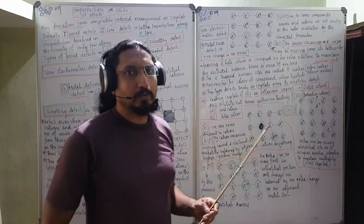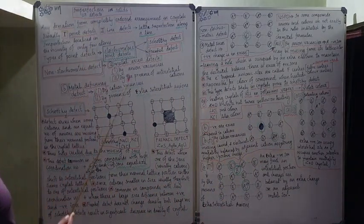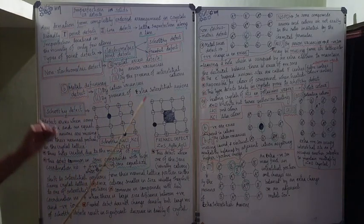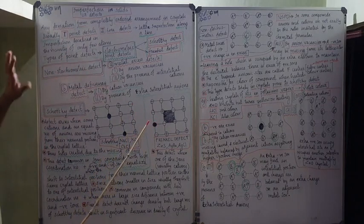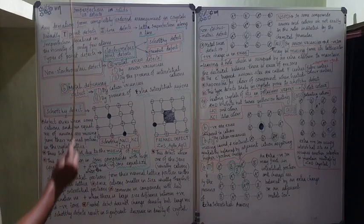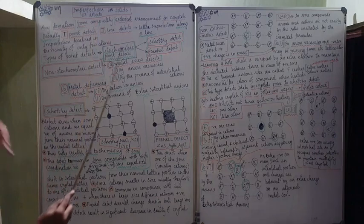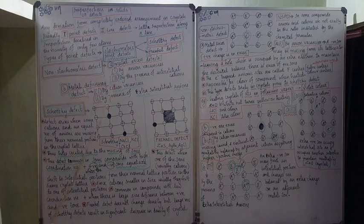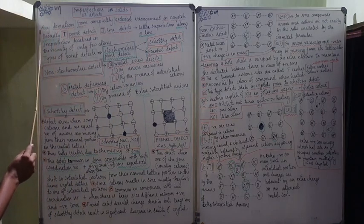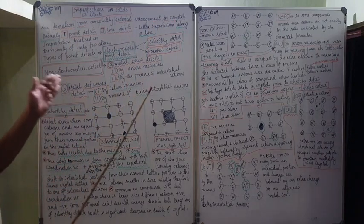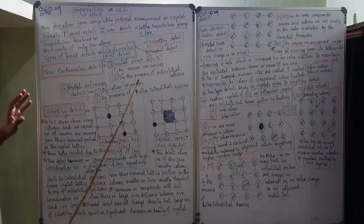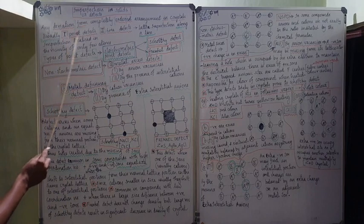The topic we are discussing is imperfections in solids, which is very frequently asked in examinations — a VIQ (Very Important Question) or FAQ. Imperfection or defect means the solid is not perfect; there are some flaws in it. Any deviation or change from the completely ordered arrangement in crystals is called an imperfection or defect in solids.